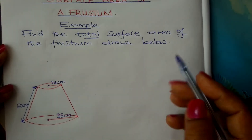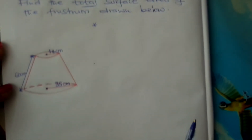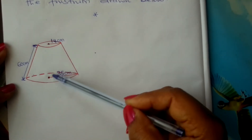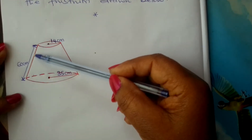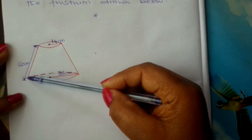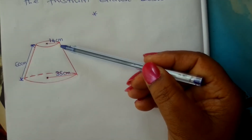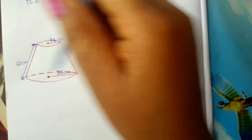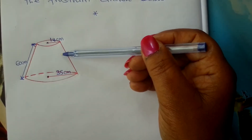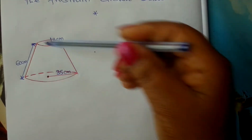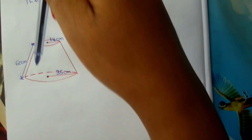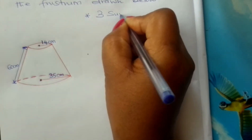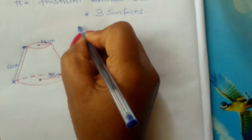Looking at our solid here — this is a frustum. We are given the top radius and the bottom radius of our frustum. We are also given the slant height. The first thing you do is to identify how many surfaces this solid has. It has the top circle, the bottom circle, and the curved surface. Therefore, this solid has three surfaces.